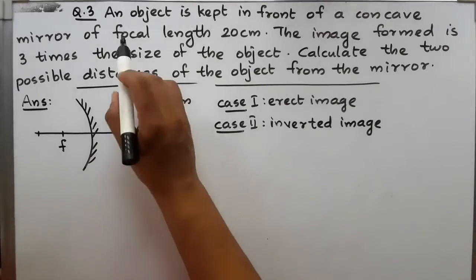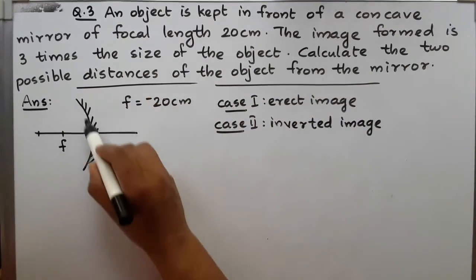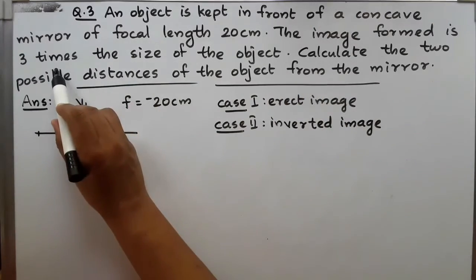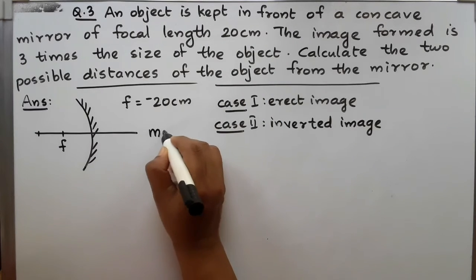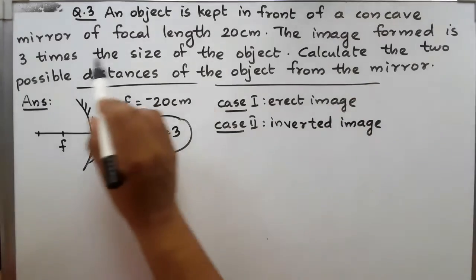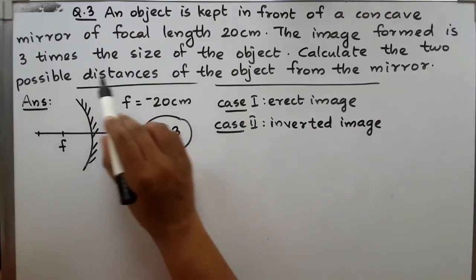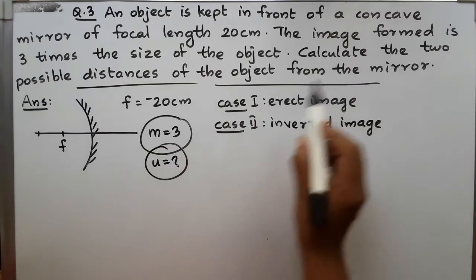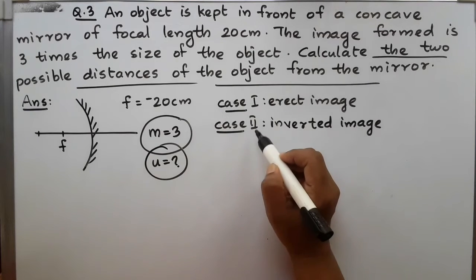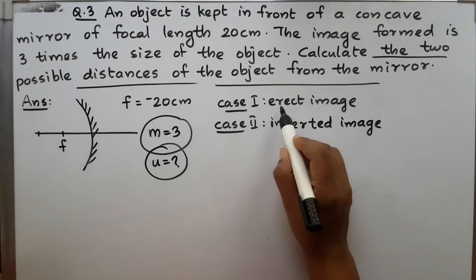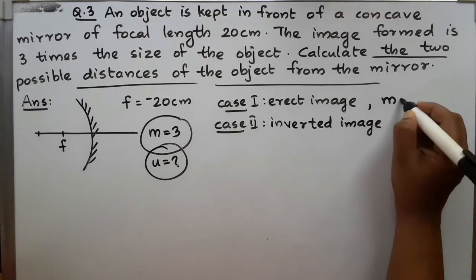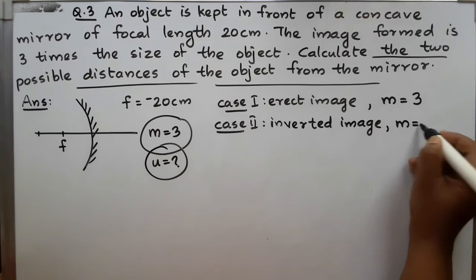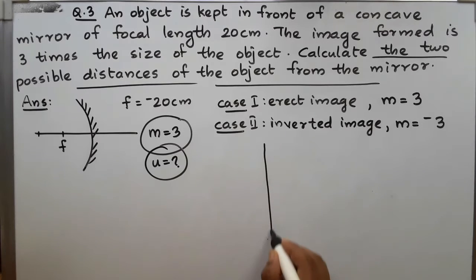This is our third question. An object is kept in front of a concave mirror of focal length 20 cm. F = minus 20 cm. The image formed is 3 times the size of the object. Calculate the two possible distances of the object from the mirror. Case 1: image is erect, so M is positive = plus 3. Case 2: image is inverted, so M is negative = minus 3.